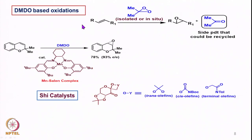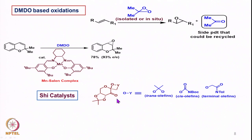Then we did DMDO-based oxidations where olefins can be epoxidized with dimethyldioxirane, which can be either isolated or reacted in situ. We also saw how DMDO is utilized in the manganese-salen complexes of the Katsuki-Jacobsen type of oxidations. From a fructose-derived ketone, we can make the Shi catalyst, which leads to epoxidation of olefins to chiral epoxides.